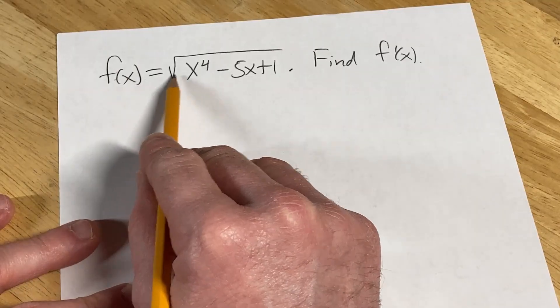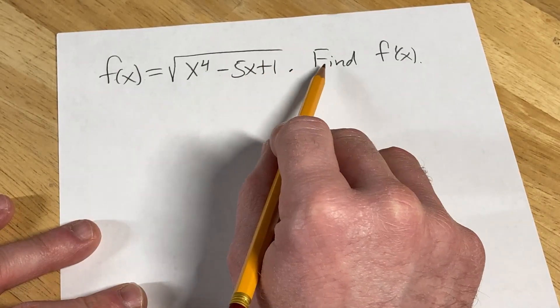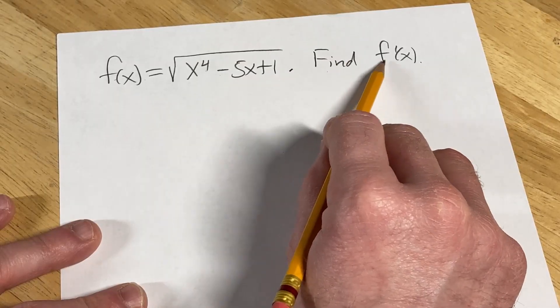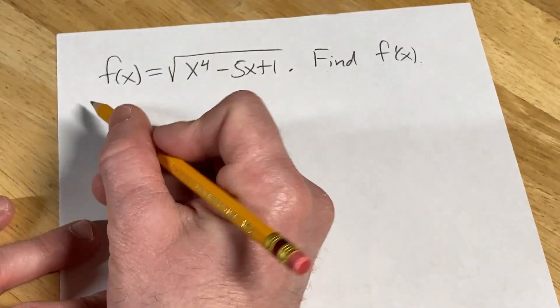We have f of x equals the square root of x to the fourth minus 5x plus 1, and the question is to find f prime of x, which is the derivative of f of x. Let's go ahead and work through this solution.